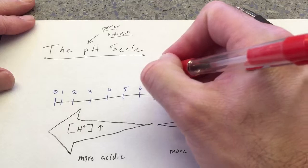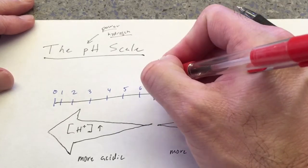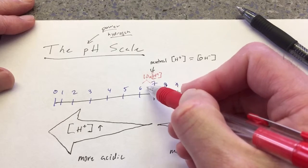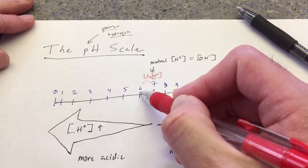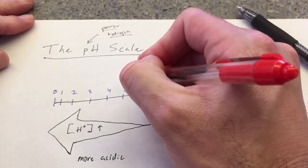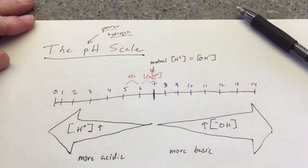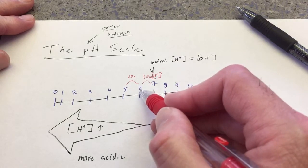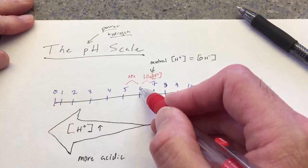So 10 times more hydrogen ions at pH 6 than there are at pH 7. Now from 6 to 5, same thing. There are 10 times the amount of hydrogen ions at pH 5 than there are at pH 6.